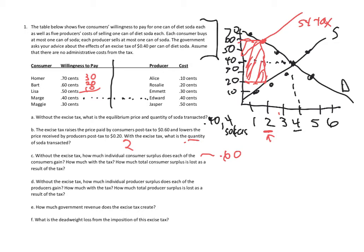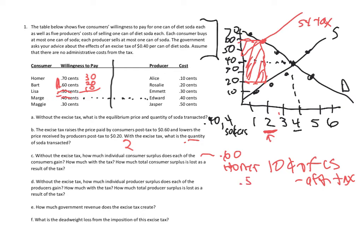With the tax, a different scenario plays out. Only two consumers can get the good, and the price is now 60 cents. Lisa, who used to get it, no longer gets it. Marge can no longer afford it. Of the two remaining consumers, Bart won't have any surplus at all after the tax since the price equals his willingness to pay. Only Homer, willing to pay 70 cents, gets 10 cents of consumer surplus. So 50 cents of consumer surplus was lost as a result of the tax.